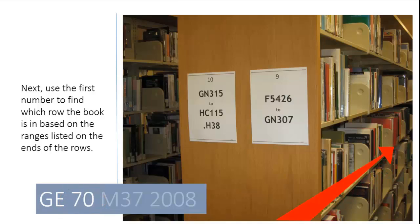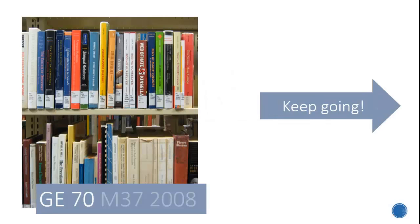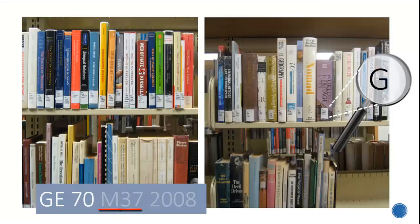Glance at the letters and numbers on the spines of the books to find the correct section. As you walk down a row, you'll find that books are ordered within their section alphabetically, then numerically according to the second set of letters and numbers, and then by date.